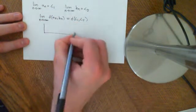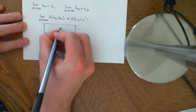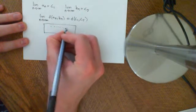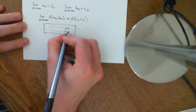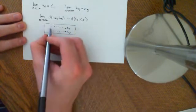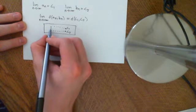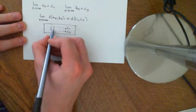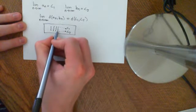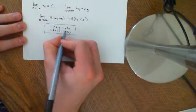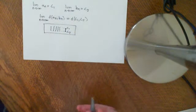In pictures, what we have is two sequences: here's the sequence a converging to a limit L1, here's a sequence b converging to a limit L2. And what we are dealing with is the sequence — the distance between a1 and b1, the distance between a2 and b2, the distance between a3 and b3, etc. — and it's going to converge on the distance between L1 and L2.